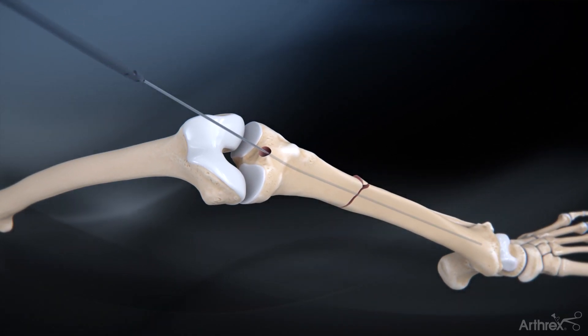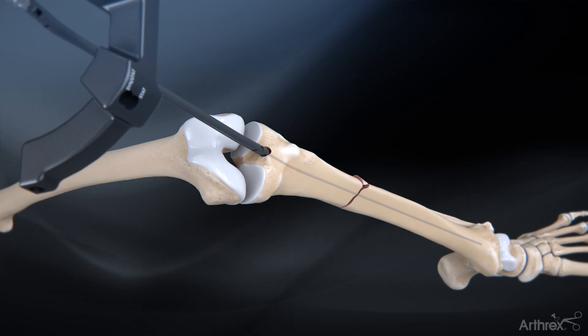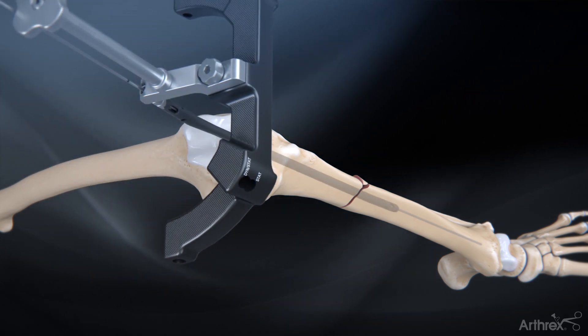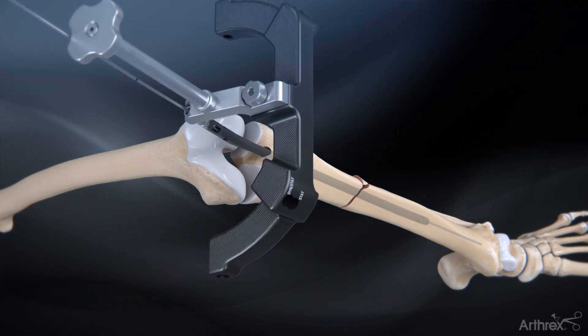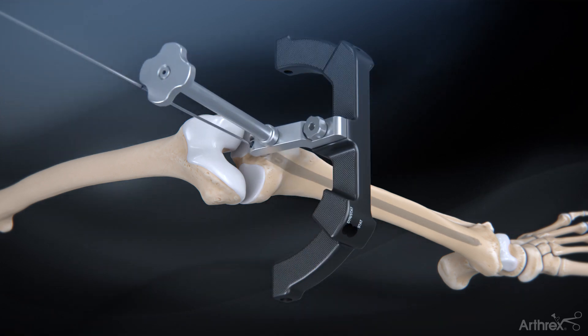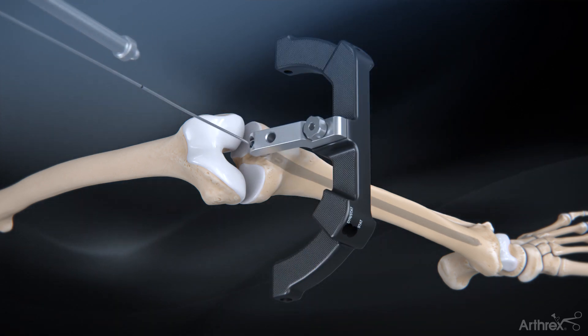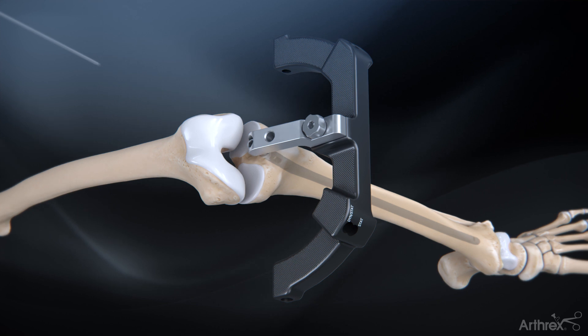Remove the entry tube and insert the nail over the ball nose guide wire and into the canal. Lightly strike the impactor pad with a mallet to complete the nail insertion. Remove the ball nose guide wire.